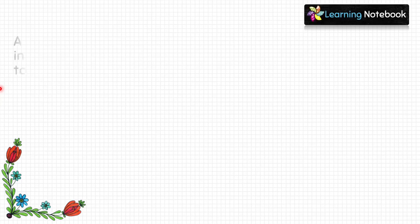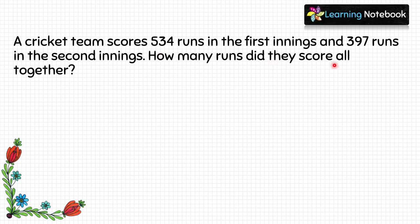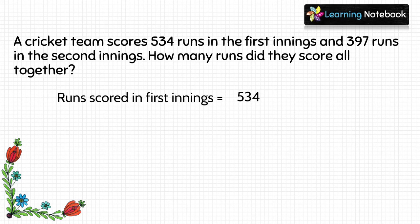Let's move to the next word problem. A cricket team scores 534 runs in the first innings and 397 runs in the second innings. How many runs did they score altogether? We are given the scores for both innings and need to find the total, so this is a clear case of addition.